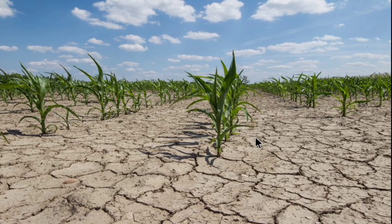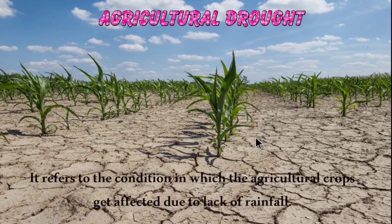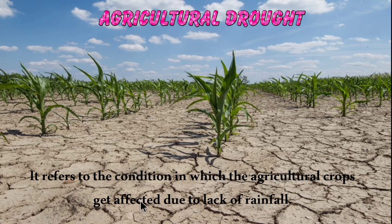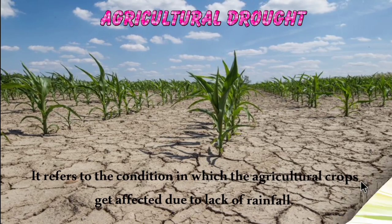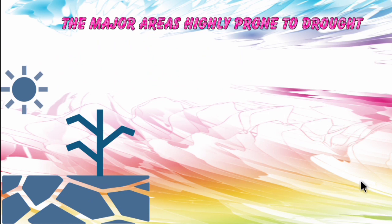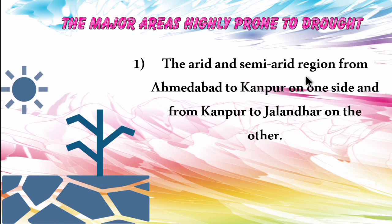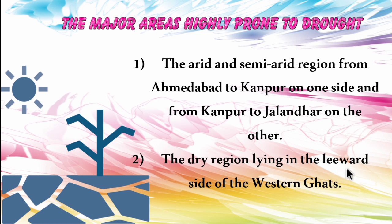Agricultural drought refers to the condition where agricultural crops get affected due to lack of rainfall. The major drought-prone areas are the arid and semi-arid region from Ahmedabad to Kanpur and Kanpur to Jalandhar, and the dry region on the leeward side of the Western Ghats.